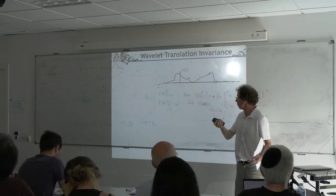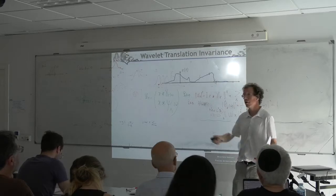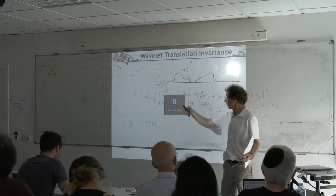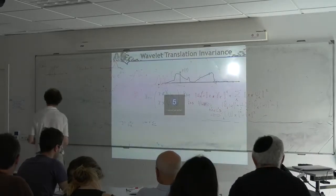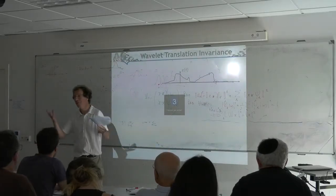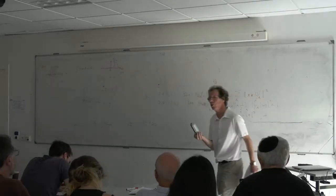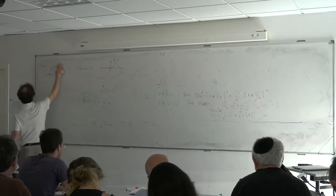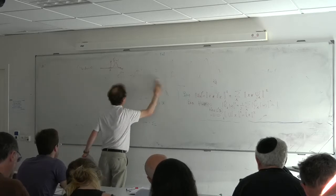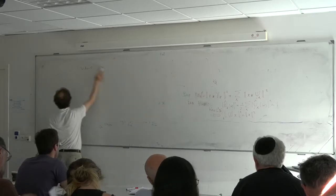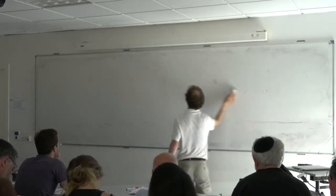Let me now go to the issue of invariance and linearization with respect to translation. Suppose you have an X in 1D with strong singularities. You want to impose invariance to translation with a linear operator. The only invariant to translation which is linear is obtained by averaging along U — averaging along the orbit of the group.